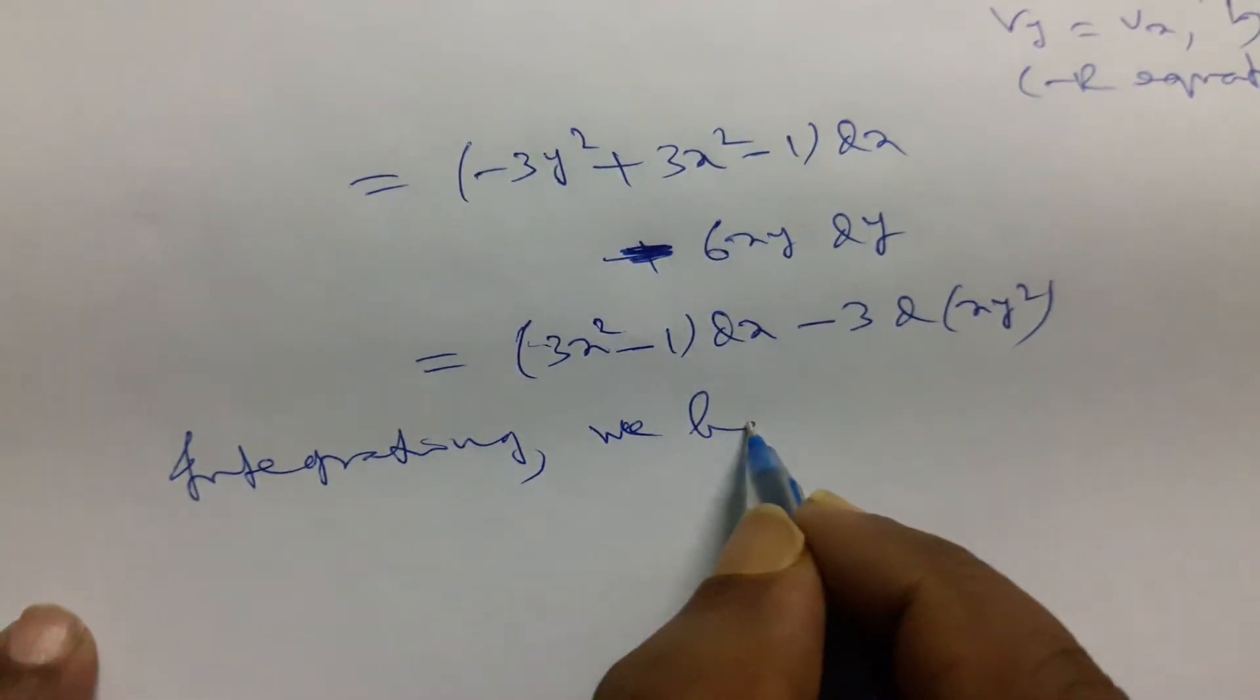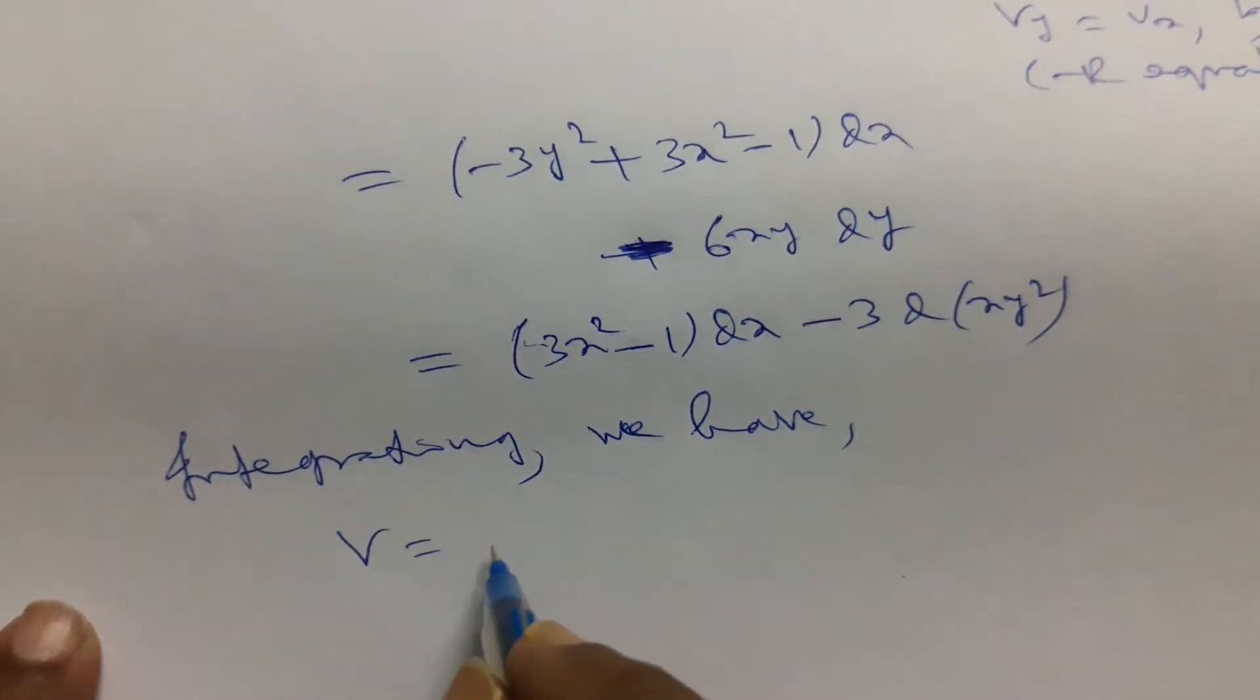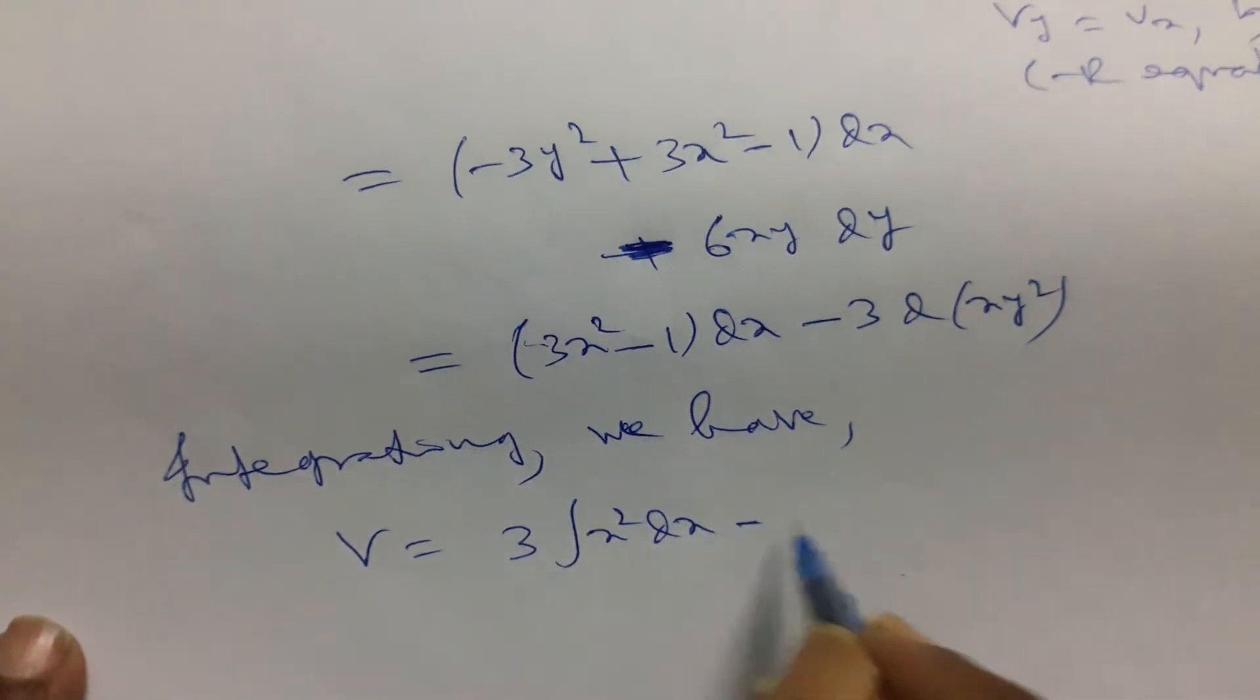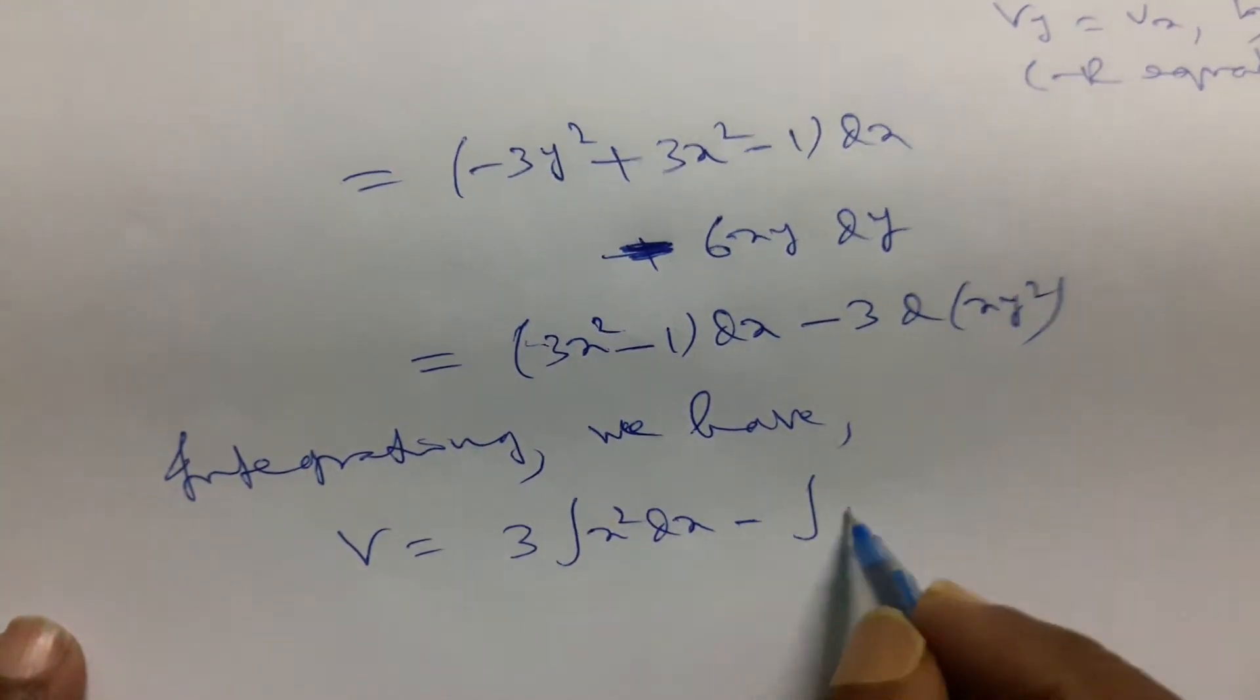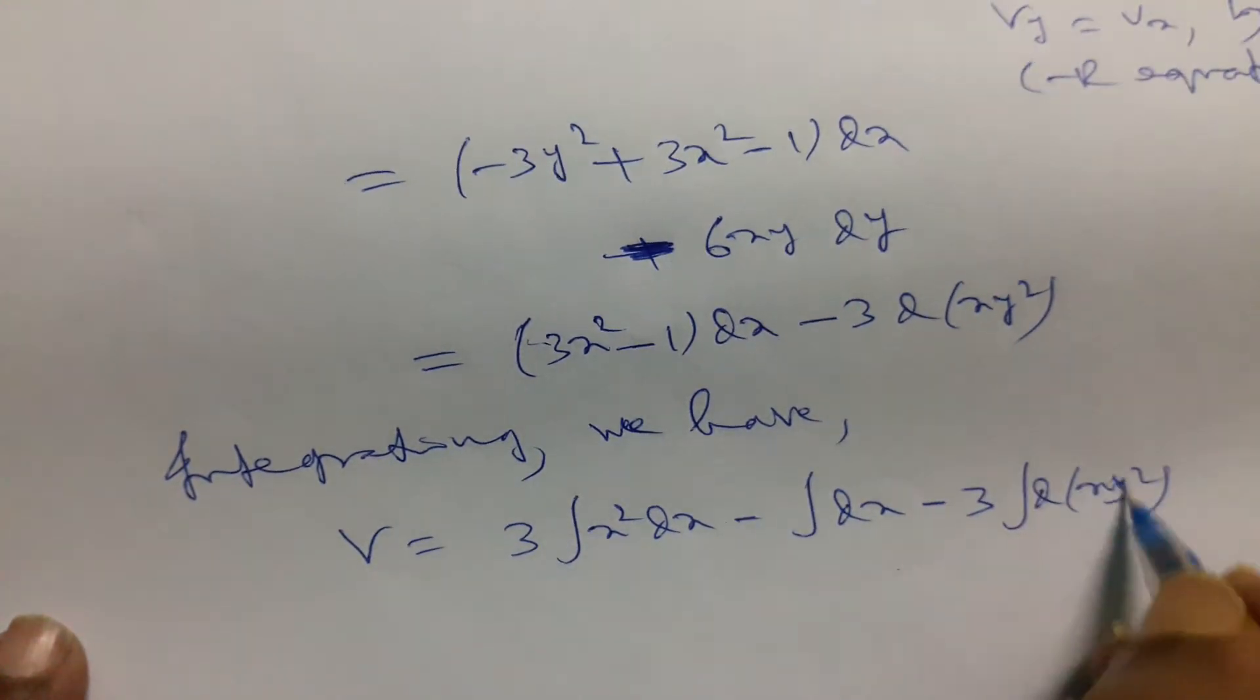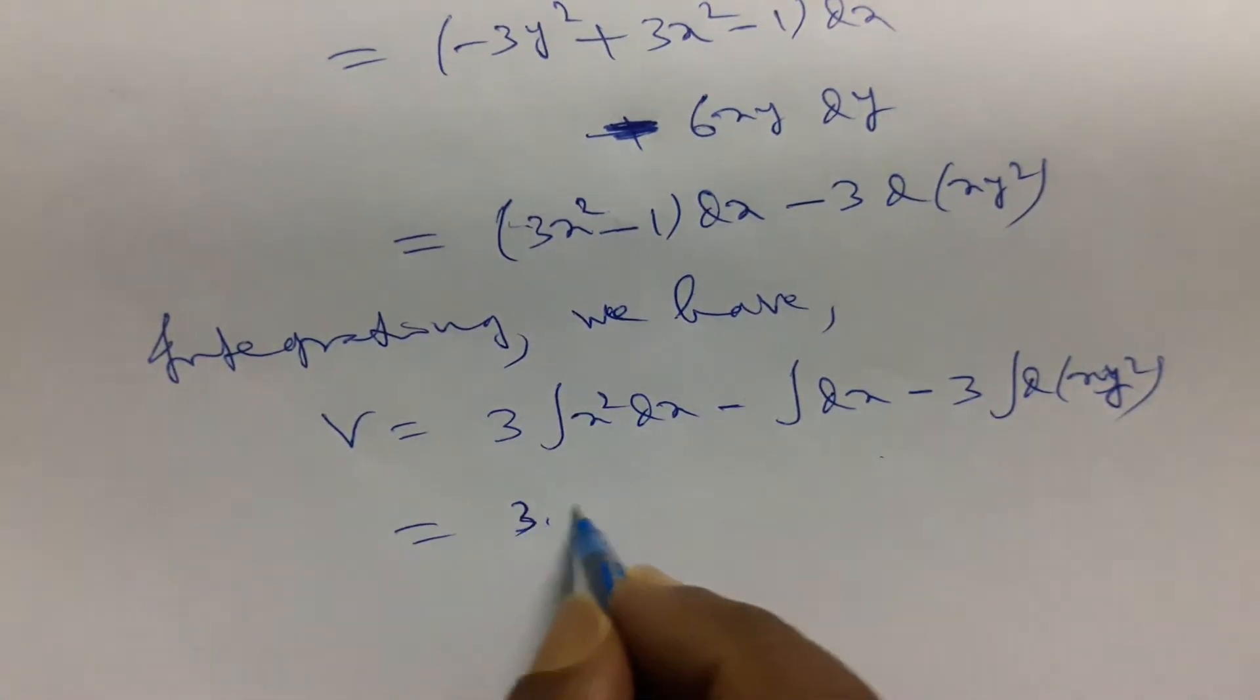We have v is equal to 3 integration x square dx minus 3 integral d of xy square. We are getting here through general integration formula.